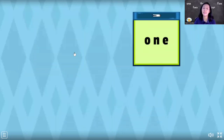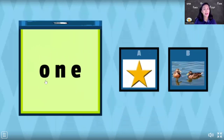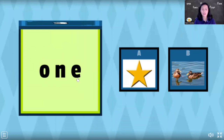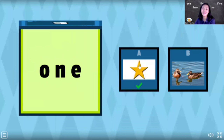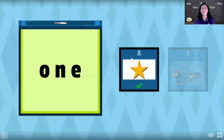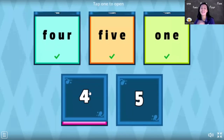Now number three. Let's spell the number: O-N-E. O-N-E. Check your ice cream — O-N-E is number one. That's good! So which one is one — is it a star or ducks? One — star! Yes, thank you, children.